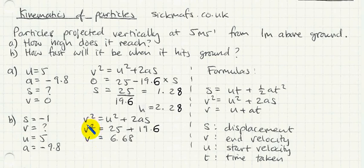So V, we still don't know it. So we just carry on writing V squared. U squared is still 25. 2As, in this case, that happens to be 19.6, because we're doing 2 times minus 9.8 times minus 1. So minus times minus is a plus. So you get that. Anyway, you work out what V squared is, and square root, and you get V equals 6.68 meters per second. Then we have done the example. Thank you very much.